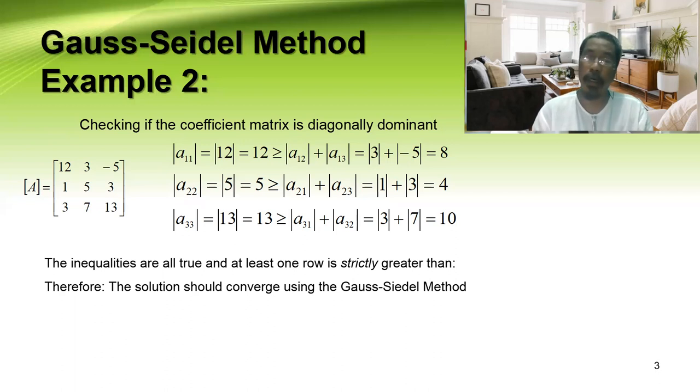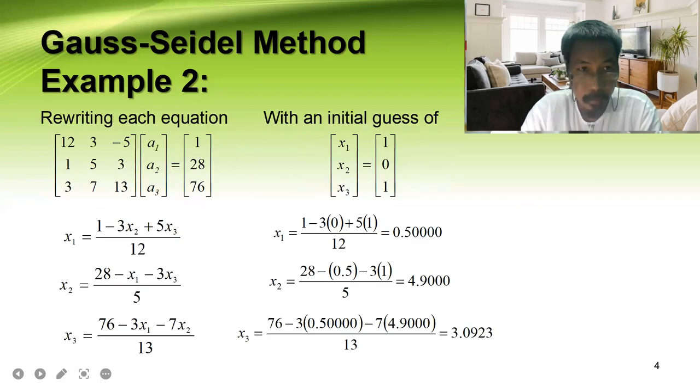This is how we test the matrix if it is diagonally dominant, so that we know if we use the Gauss-Seidel method it would converge. So we verify.